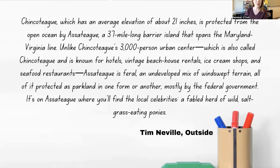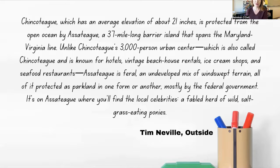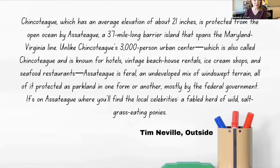This is from a piece about wild horses from Outside Magazine. 'Chincoteague, which has an average elevation of about 21 inches, is protected from the open ocean by Assateague, a 37-mile-long barrier island that spans the Maryland-Virginia line. Unlike Chincoteague's 3,000-person urban center — which is also called Chincoteague and is known for hotels, vintage beach house rentals, ice cream shops, and seafood restaurants — Assateague is feral, an undeveloped mix of windswept terrain, all of it protected as parkland, mostly by the federal government. It's on Assateague where you'll find the local celebrities: a fabled herd of wild saltgrass-eating ponies.'